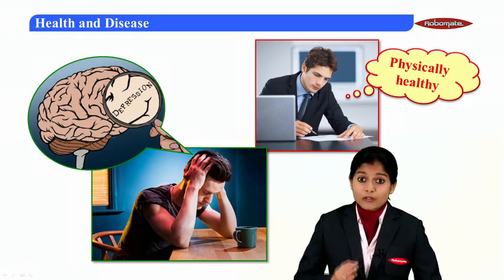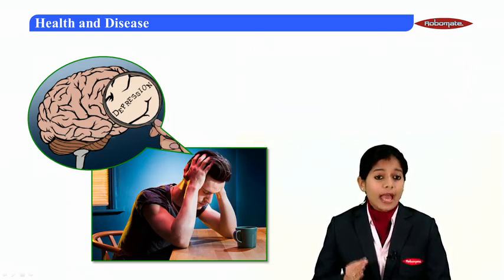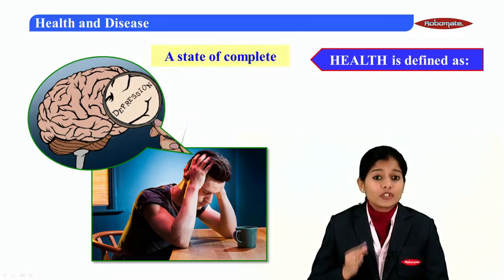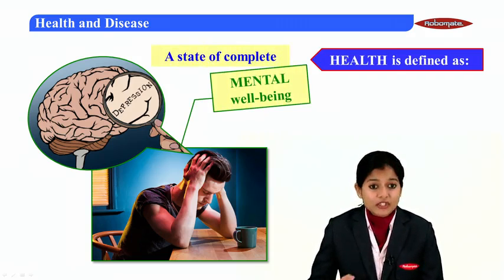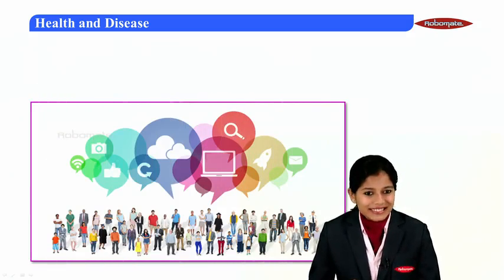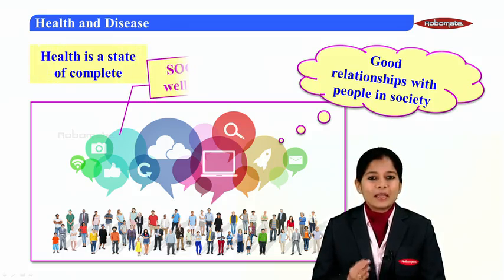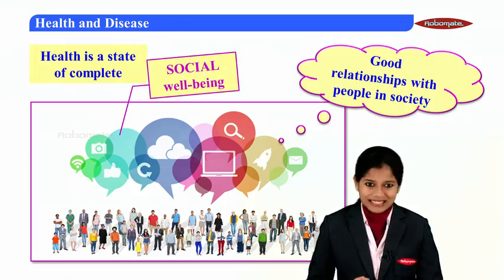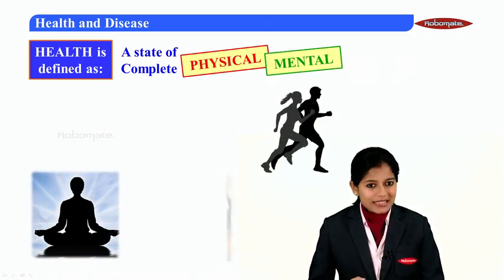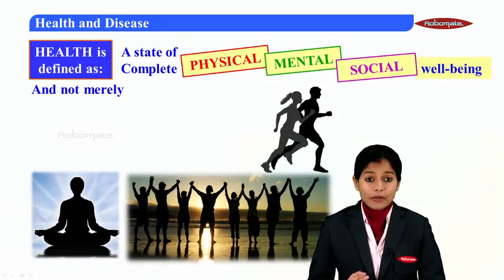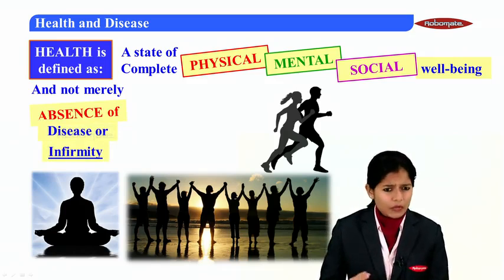Depression plays a very important role. A person is truly healthy only if they have a complete state of mental well-being — that means the person should not have any sort of depression. Next is maintaining good relationships with people in society, which is social well-being. So health is defined as a state of complete physical, mental, and social well-being, and not merely the absence of disease or infirmity. Infirmity means a state of weakness or debility.